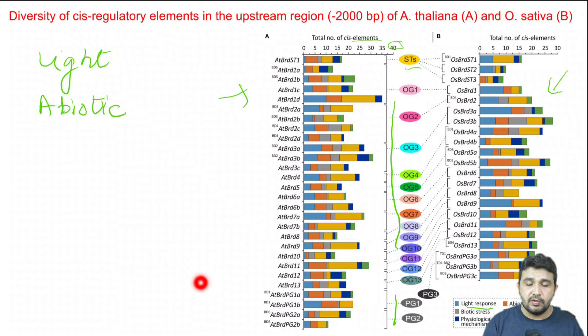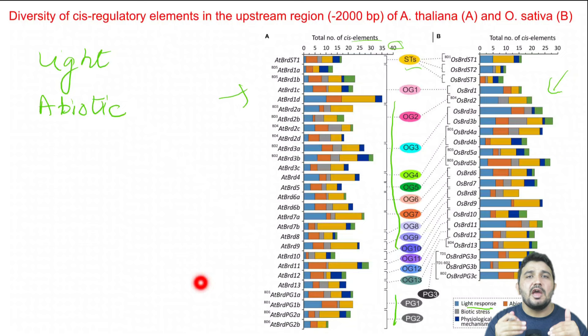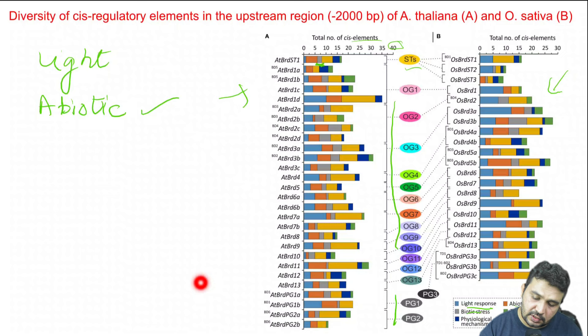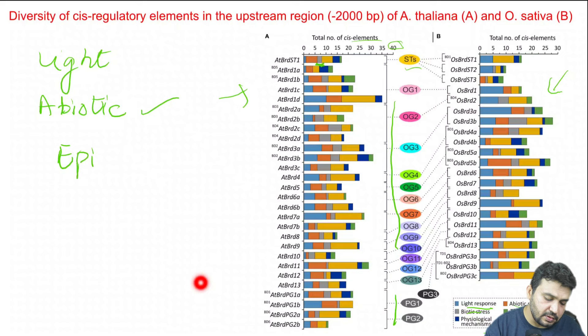This analysis is called genome-wide characterization because we cannot confirm a specific protein function here, but as a general characterization we can predict that this family might be involved in certain processes. For example, light-responsive elements suggest involvement in light response, and abiotic stress cis-elements suggest stress involvement. We know that to confirm protein function we need knockout experiments or complementation, but from here we can characterize what functions may be linked to this protein family.